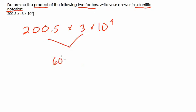So 3 times 200 is 600. 3 times 1 half is 1.5. If we add those together, we get 601.5. We still have to multiply by 10 to the 9th, though.